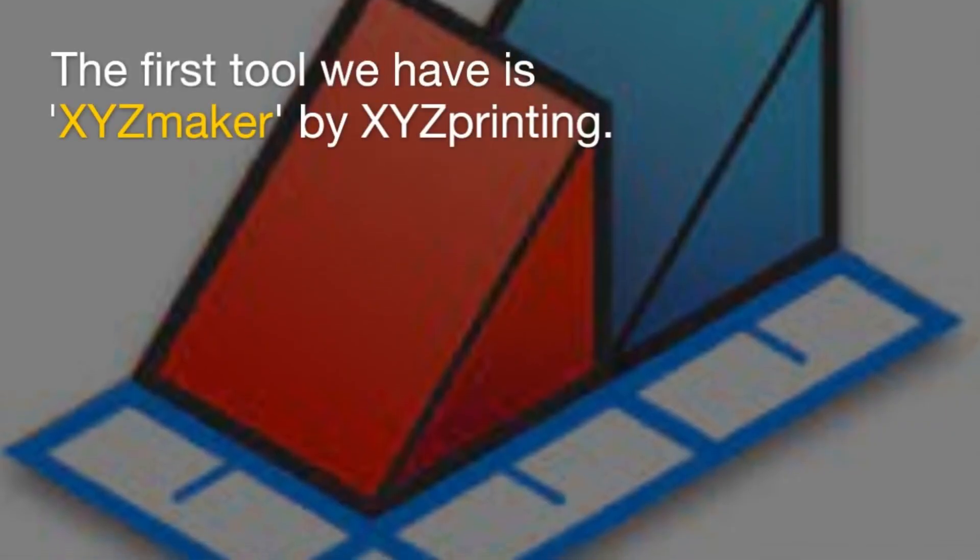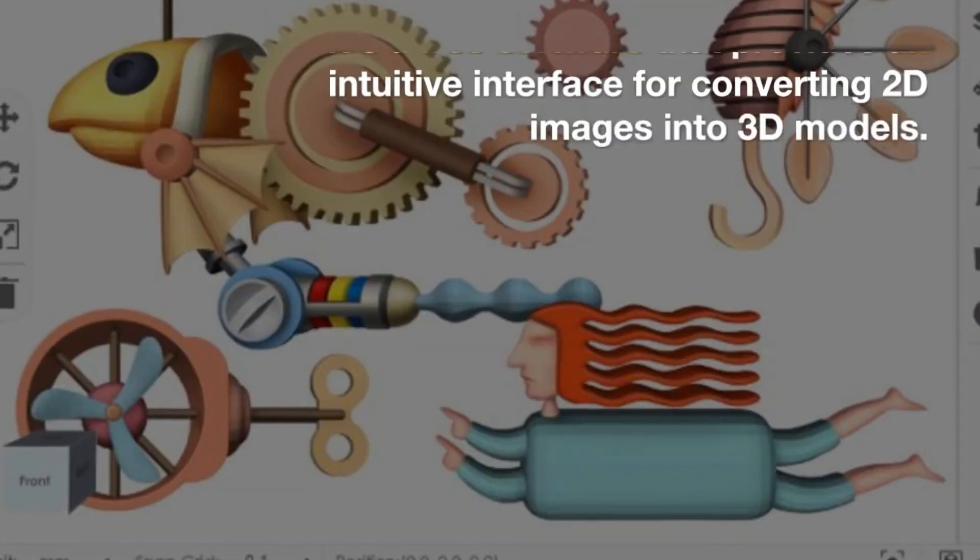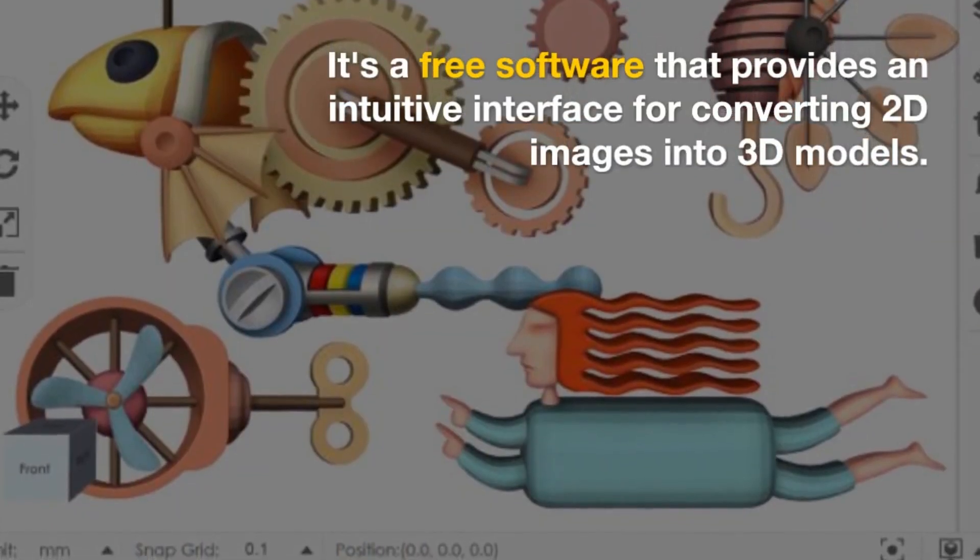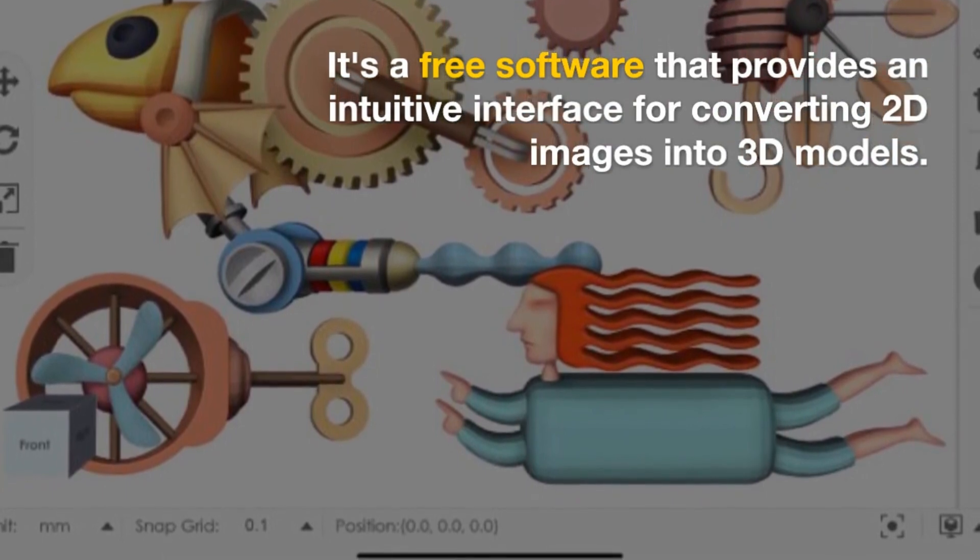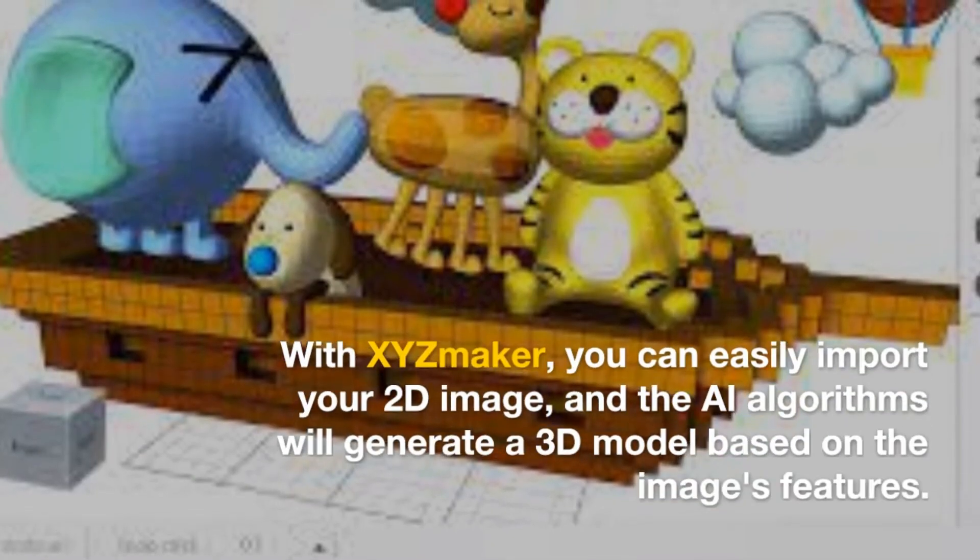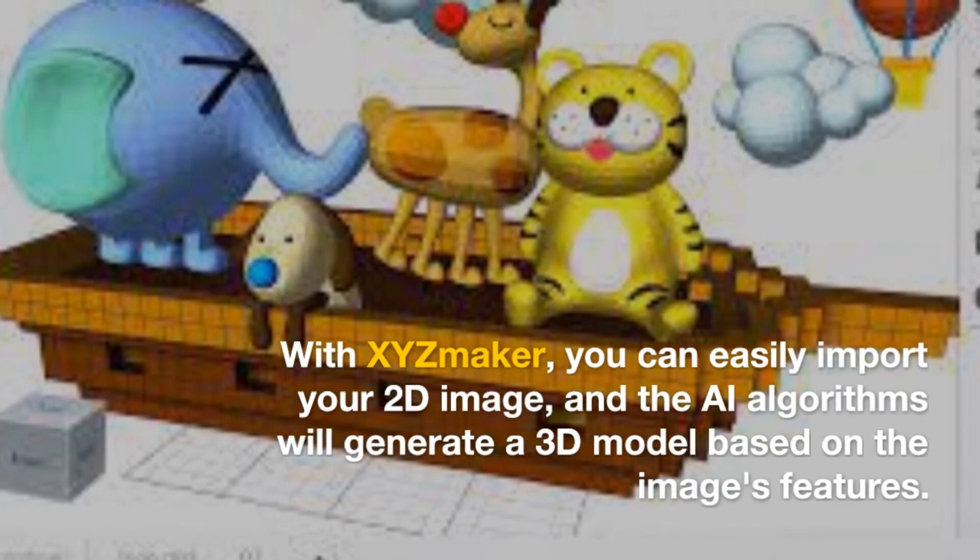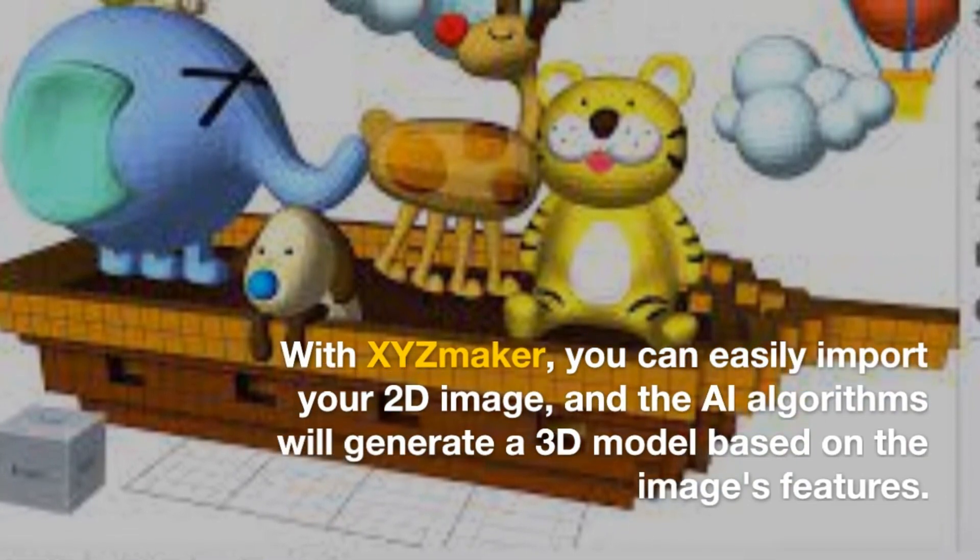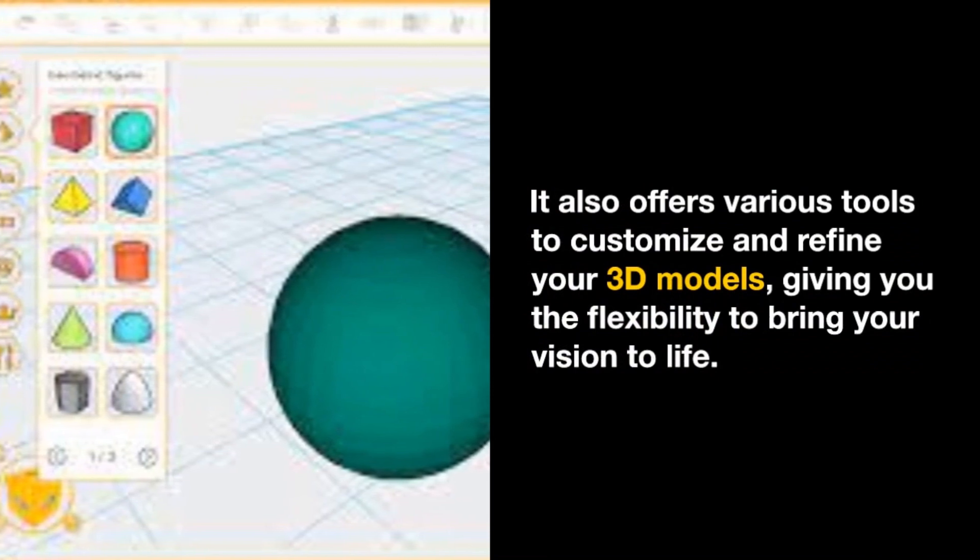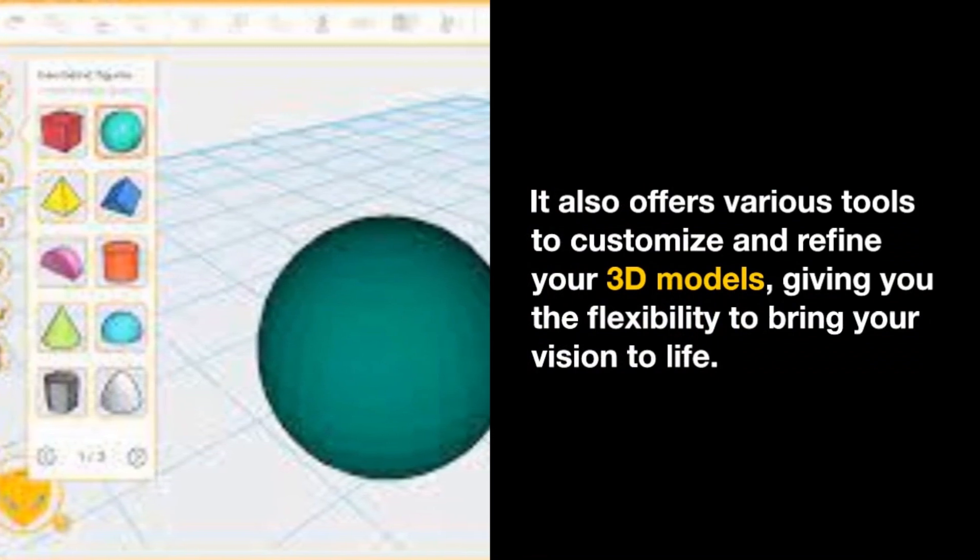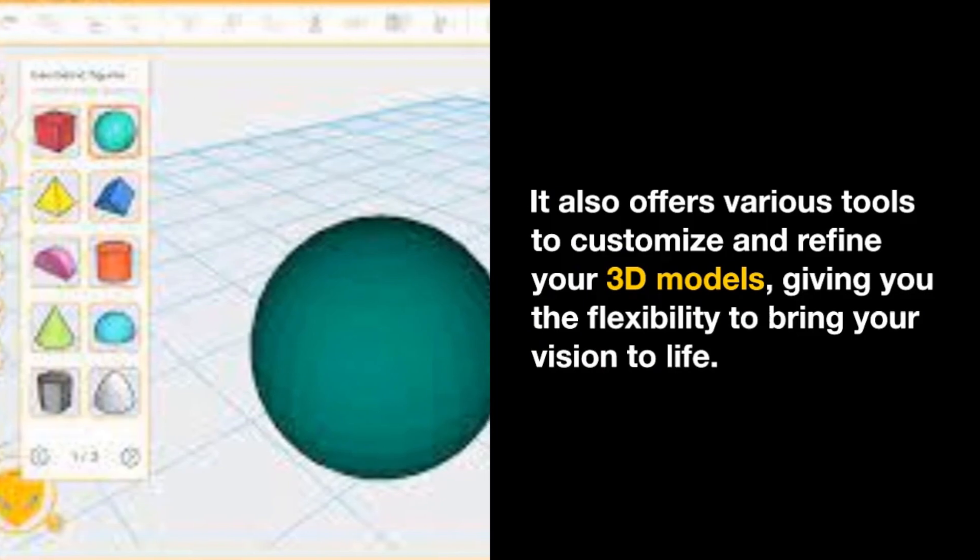The first tool we have is XYZ Maker by XYZ Printing. It's a free software that provides an intuitive interface for converting 2D images into 3D models. With XYZ Maker, you can easily import your 2D image, and the AI algorithms will generate a 3D model based on the image's features. It also offers various tools to customize and refine your 3D models, giving you the flexibility to bring your vision to life.